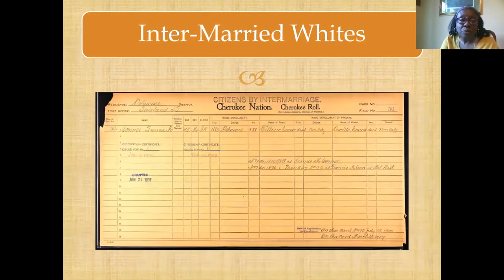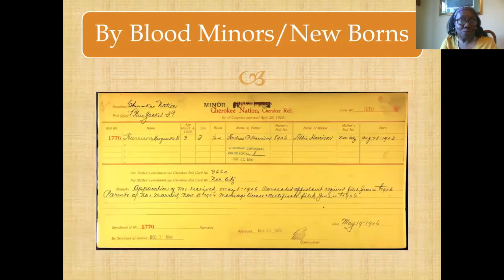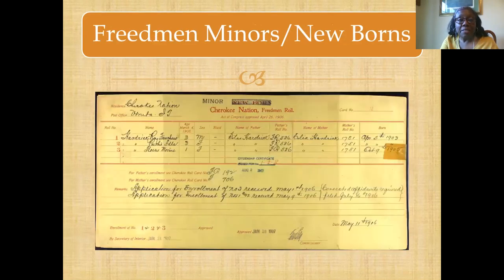Intermarried whites had similar cards — basically the same as those considered citizens by blood, with the names of their parents as well. You see stamped on the top: 'citizens by intermarriage.' Unfortunately, one could not become a citizen by intermarriage as a freedman. They did not accept intermarried freedmen — meaning people who had married state Negroes, as they were called — someone who had migrated from Arkansas, Mississippi, or Louisiana into the territory and married a freed person. They did not consider them citizens by intermarriage. Citizens by blood minors and newborns — you see in this case a Cherokee minor card — the name of the child, and the name of the father and mother. In the case of freedmen, there were freedmen minors or freedmen newborns, with the name of the child and the name of the father and mother.